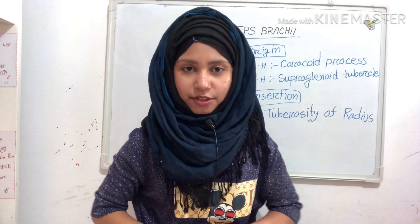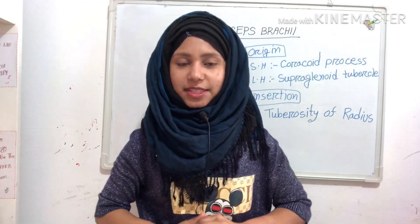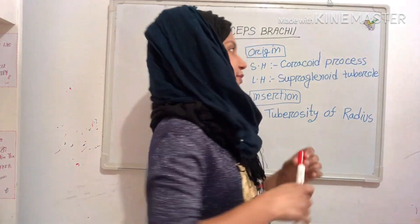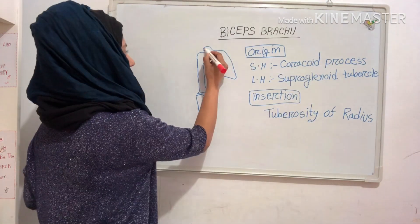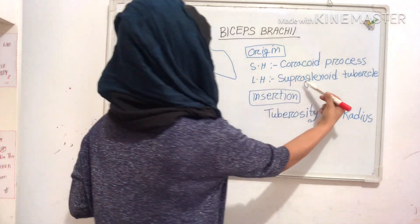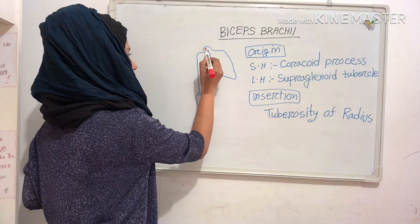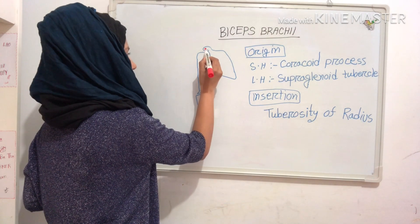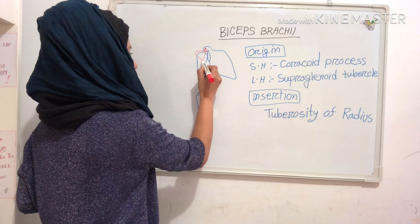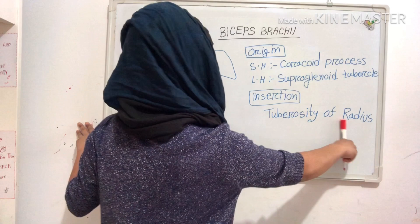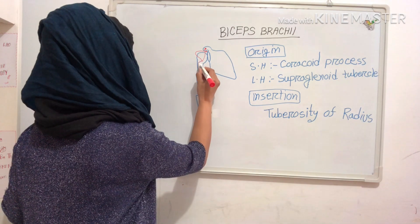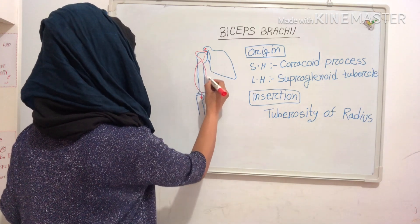First we will see our biceps brachii muscle. Biceps brachii has two heads: a long head and a short head. The short head originates from the coracoid process — this is the coracoid process. The long head originates from the supraglenoid tubercle — this is the supraglenoid tubercle. This is the short head, this is the long head, and its insertion is into the tuberosity of the radius — this is the tuberosity of the radius.